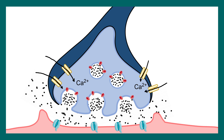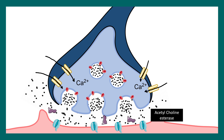The neurotransmitter released here is acetylcholine. However, acetylcholine doesn't stay in the synaptic cleft forever — otherwise the overall response would be overwhelming. Enzymes known as acetylcholinesterase can break down acetylcholine and clear that response. These are the presynaptic events.